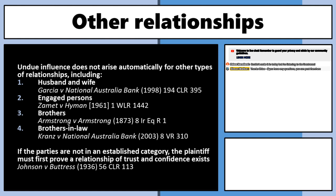Under Johnson v Buttress, if you're not in an established category, you must prove a relationship of trust and confidence existed on the facts — for example, a best friend whose advice you always followed. If you can prove that relationship, you can succeed in an action for undue influence. It becomes a two-step process. Note that even in established categories, the other side gets a chance to adduce evidence to rebut the presumption and try to keep the contract on foot.